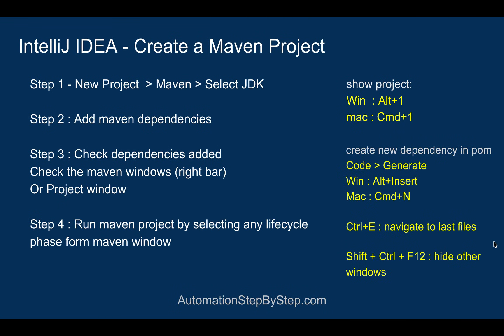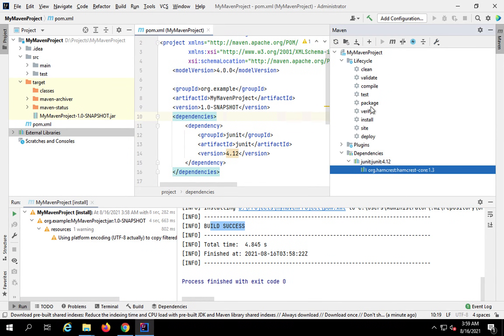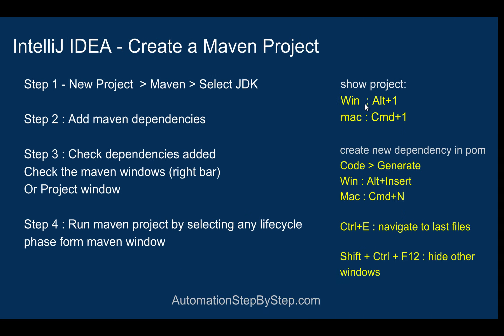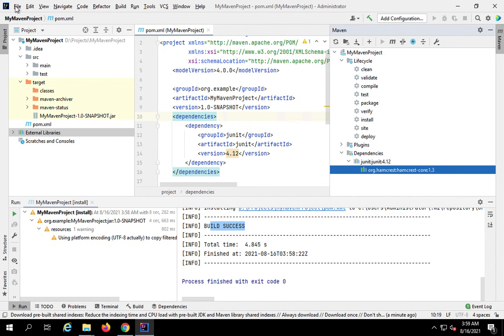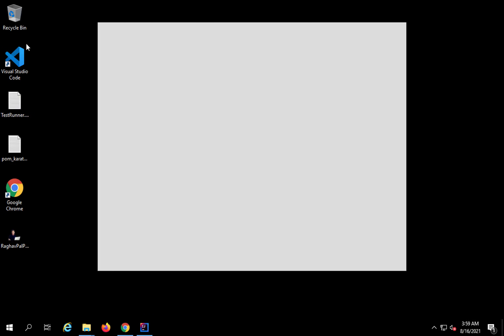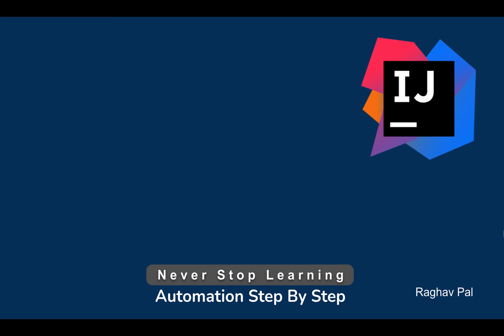Step four is running the Maven project by selecting any lifecycle phase from the Maven window, which we've already done. Go to the Maven window, expand Lifecycle, and double-click any phase to run it. To close the project, go to File and click Close Project. That's how you create a Maven project on IntelliJ IDEA. I hope this was useful — if you have any questions, let me know in the comments below. See you in the next session. Thank you for watching and never stop learning.